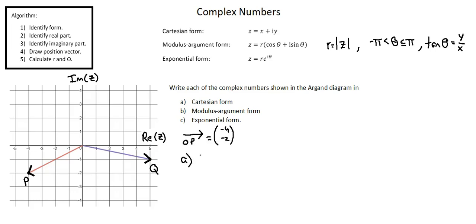Starting with A, Cartesian form, and applying our algorithm. Step 1, identify form, that's given as Cartesian. Step 2, identify real part, that's represented by the horizontal axis, negative 4.